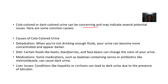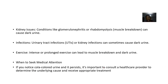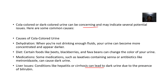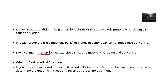Sometimes it's liver issues — conditions like hepatitis, liver cirrhosis — all of this can actually lead to dark urine due to the presence of bilirubin. Then sometimes it's kidney issues, like inflammation of the glomerulus, that's glomerulonephritis. Then sometimes muscle breakdown — that's rhabdomyolysis — can also cause dark urine. Then sometimes it's infection from the urinary tract or kidney infections, and sometimes it's exercise-induced coloring of the urine.